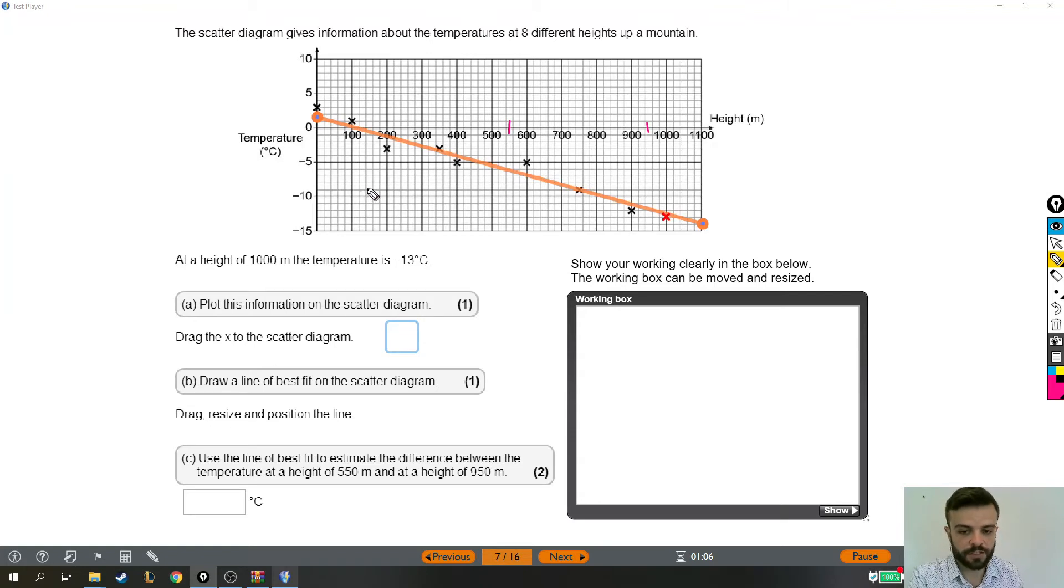So the difference in the temperatures at 550 and 950. We obviously need to know the temperatures at 550. We're going to need to know 550 and 950. Now at 550, I think that crosses this line which is minus 6. Let me just check that again. So 550 down to my line, and when I go across, I think that's pretty bang on minus 6.